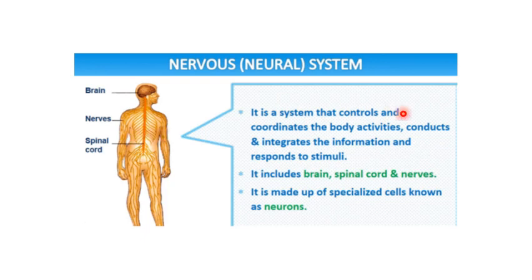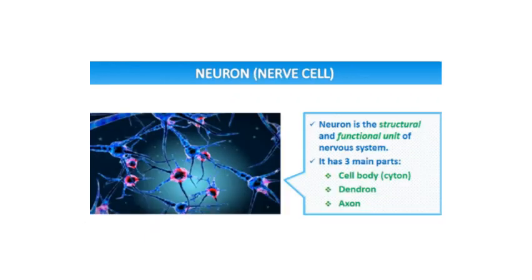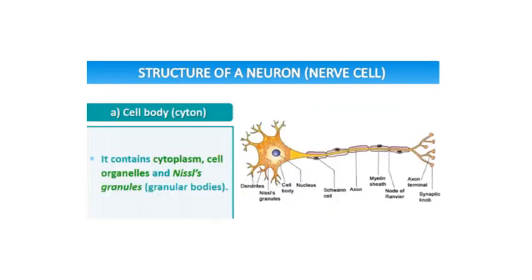It is made of specialized cells which are called neurons, which transmit nerve impulses. Neuron is the structural and functional unit of the nervous system. It has three parts: the cell body, dendron, and axon.